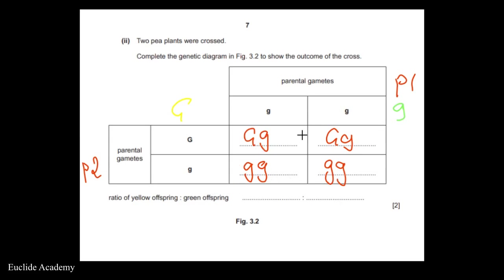Looking at the phenotypes: the two Gg offspring will be yellow since G codes for yellow, and the two gg offspring will be green since they are homozygous for g, which codes for green. The ratio of yellow offspring to green offspring is 1:1 — two yellow and two green.